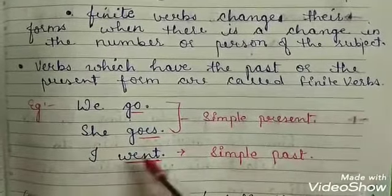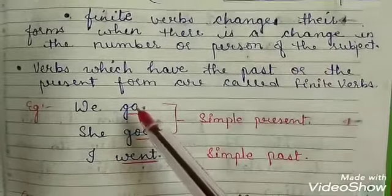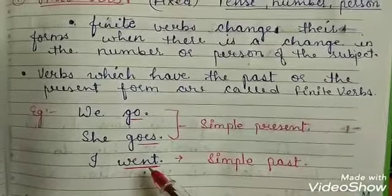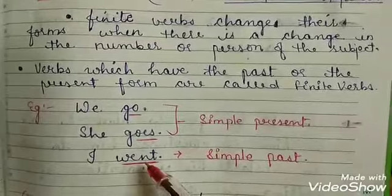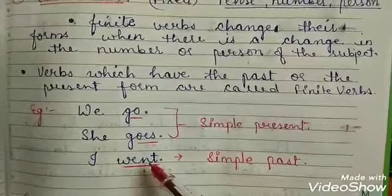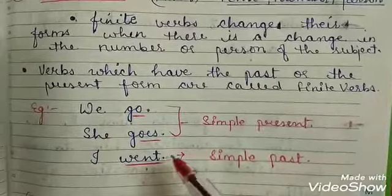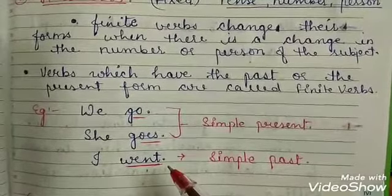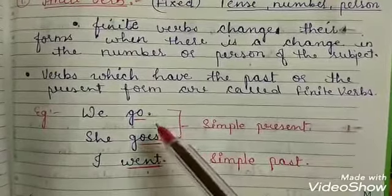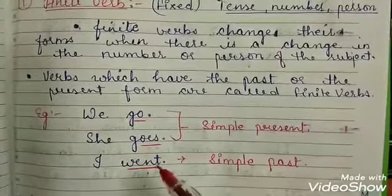Now, the third example: 'I went.' 'Went' is the second form of the verb 'go' — first form 'go', second form 'went'. So we have seen that according to the tense, the verb changes its form. If the tense of the sentence changes, the form of the verb also changes. In simple present tense we use V1, and in simple past tense we use V2.